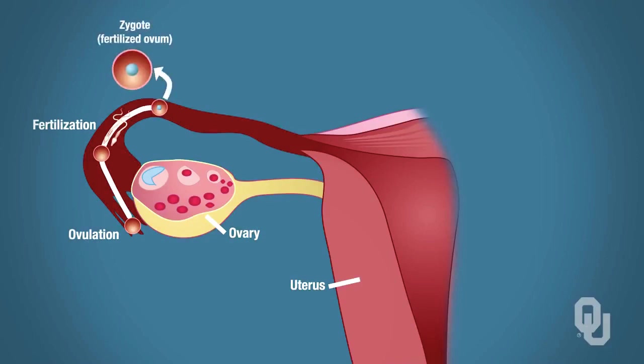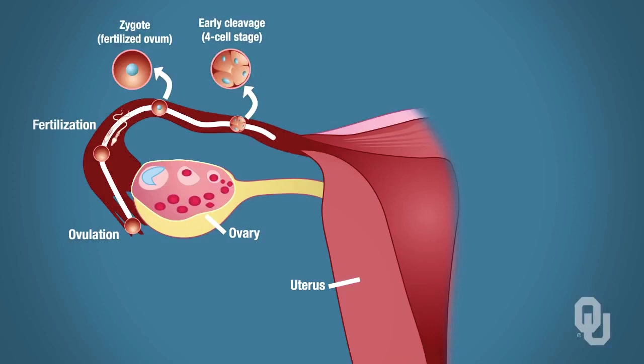Now that zygote is going to undergo mitosis, and when it undergoes mitosis the result is a four-cell stage. Then it's going to undergo mitosis again, and then it will become a morula. A morula is literally a solid ball of cells—if you look at this image, it's nothing more than a solid ball of cells.